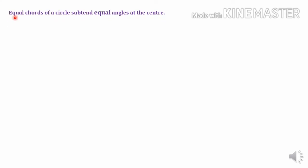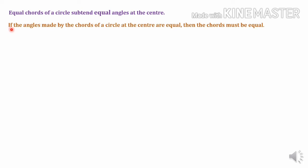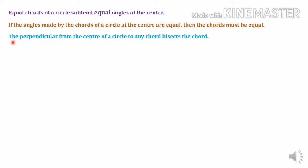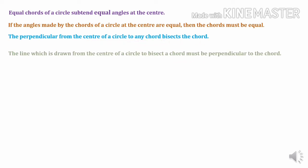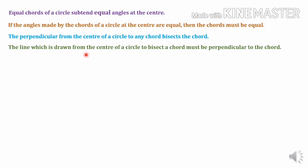Now let's recall all the statements or the results what we have learned so far. The first statement was: equal chords of a circle subtend equal angles at the center. Second one: if the angles made by the chords of a circle at the center are equal, then the chords must be equal. Third one: the perpendicular from the center of a circle to any chord bisects the chord.